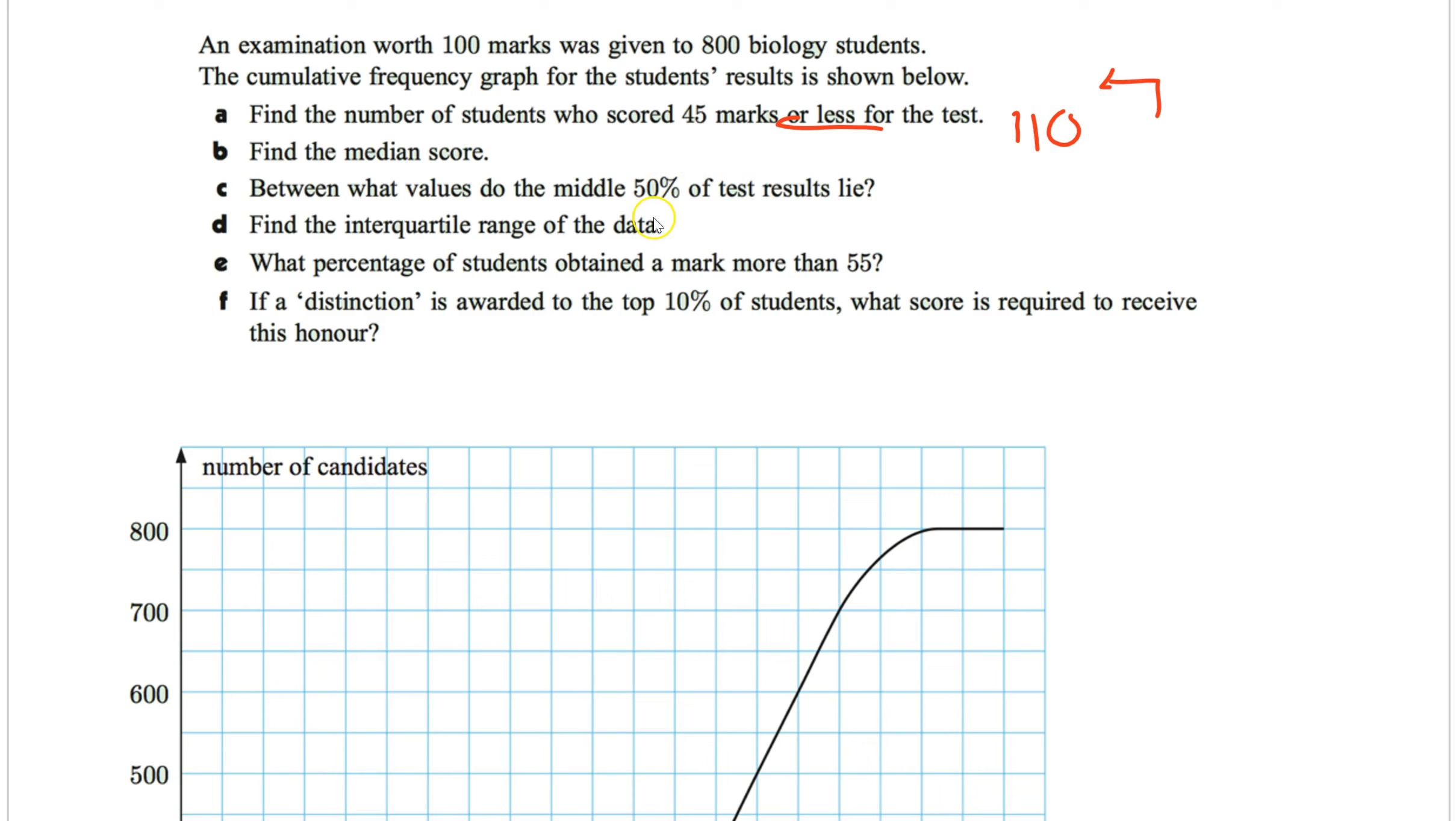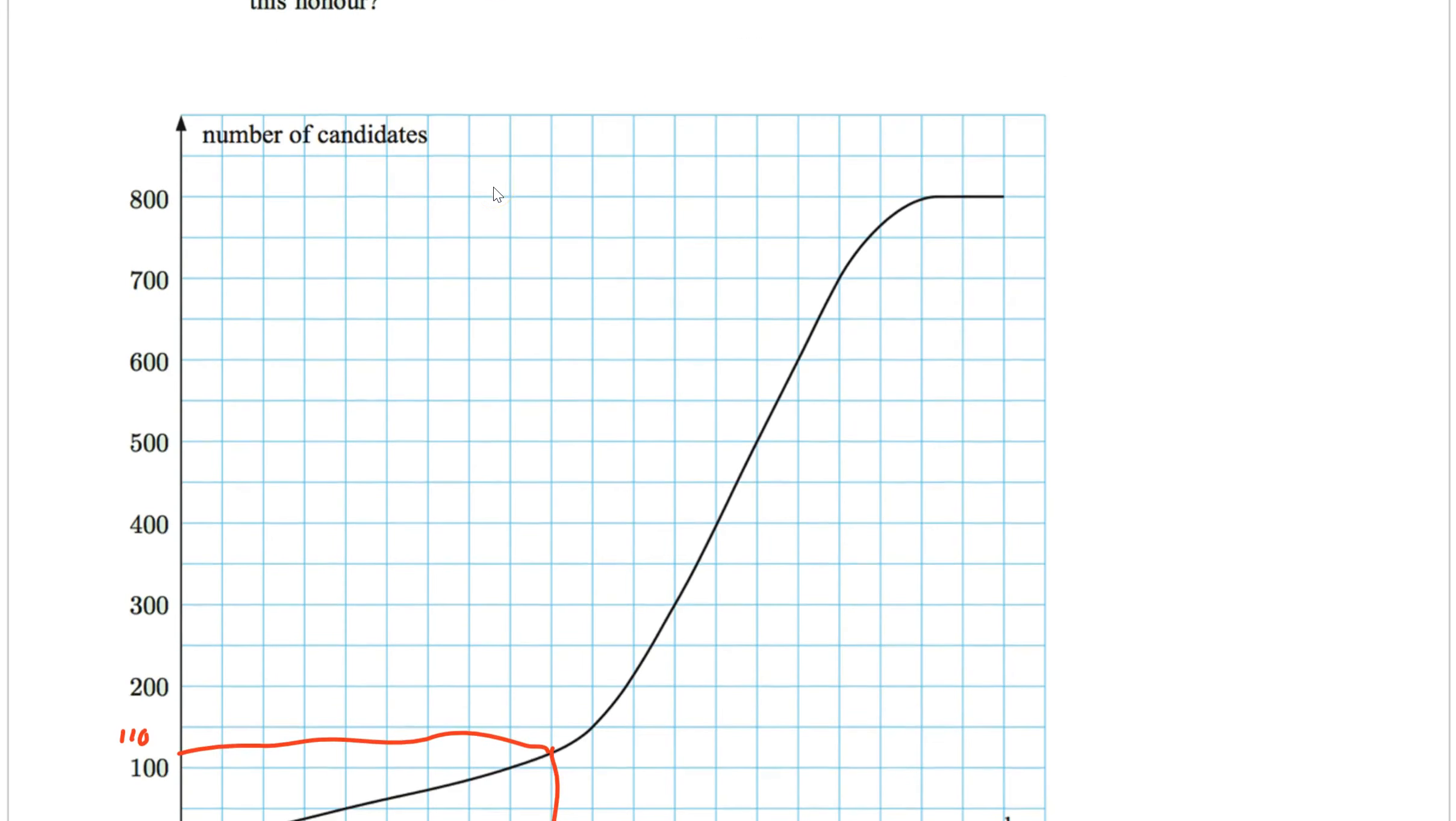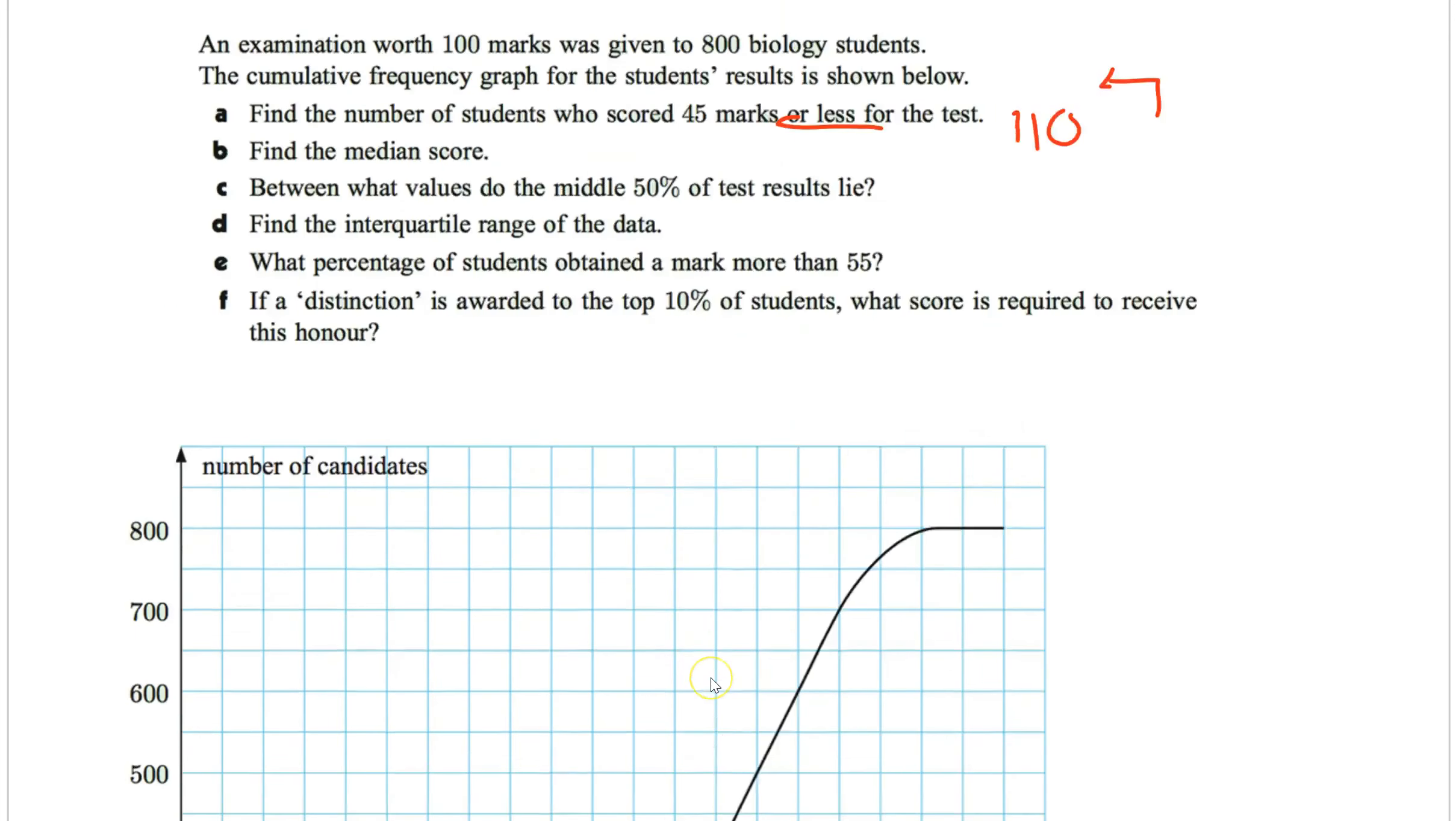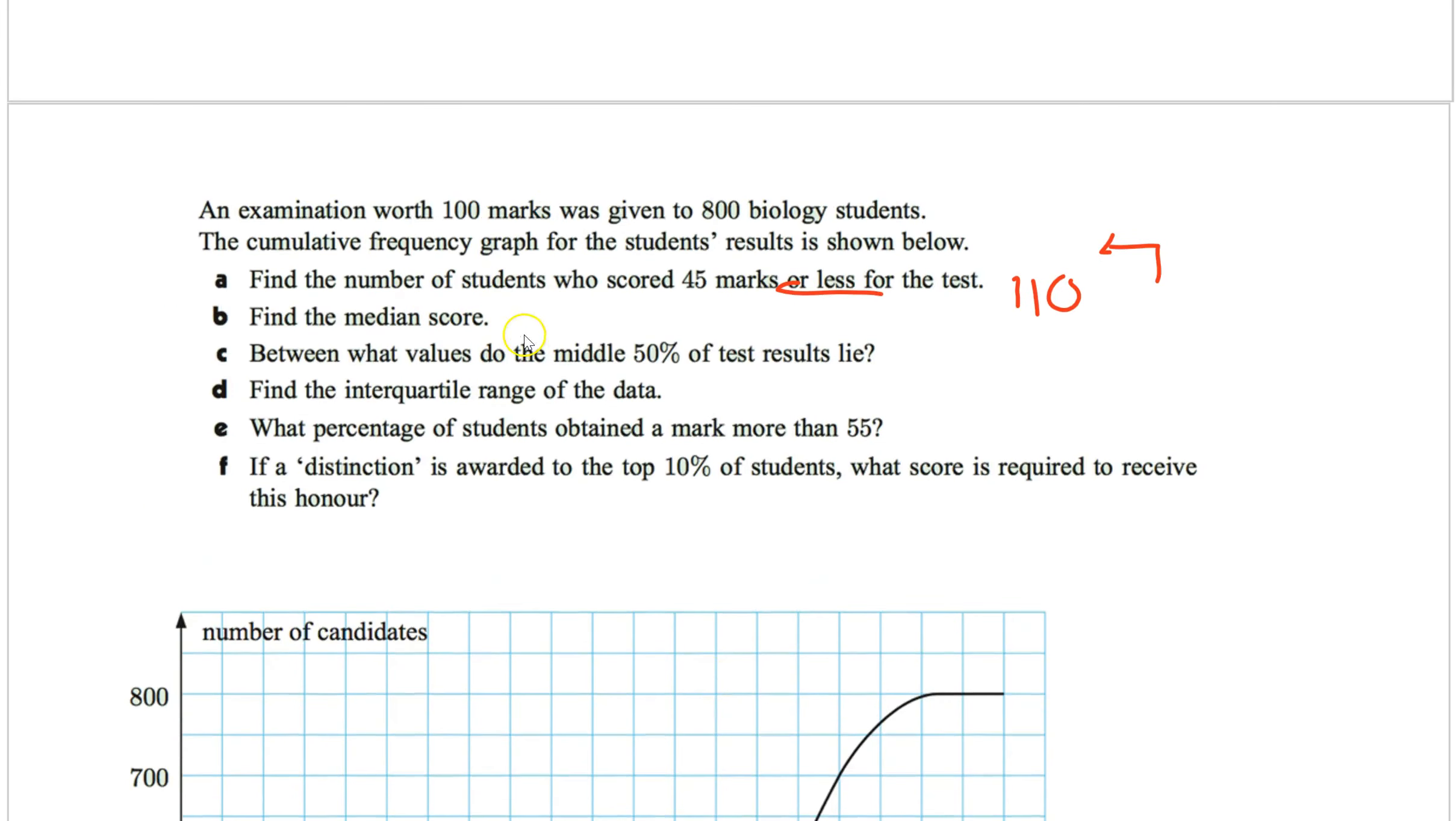Find the median score. So remember median, just go 800 students. The median will be about 400. So for the median score, I'm going to go right here to 400. That's my median. Because my max is 800. My lowest is 0. So then I'm going to go across and down. I'm going to go down and I get 65. So 65 marks is the median score.